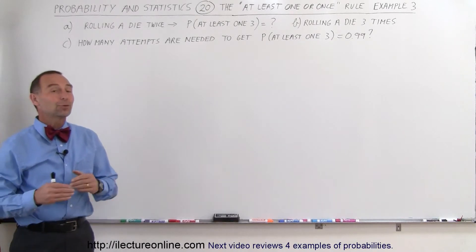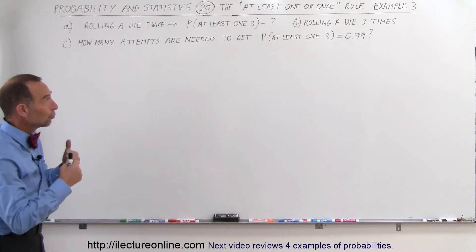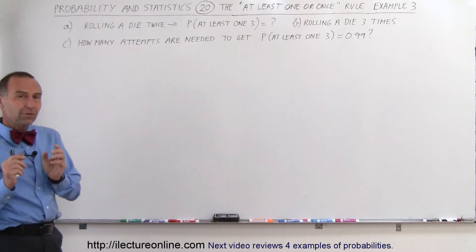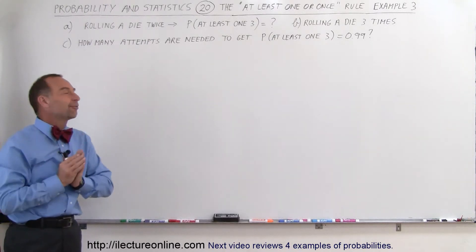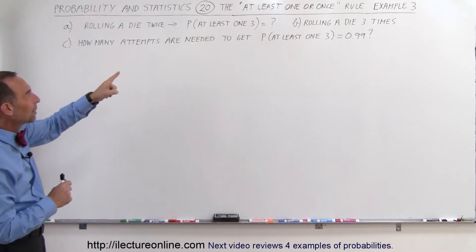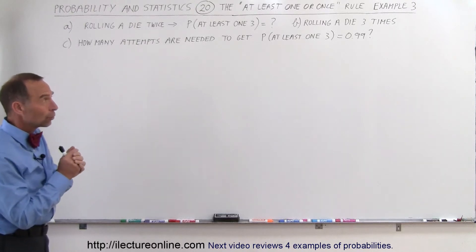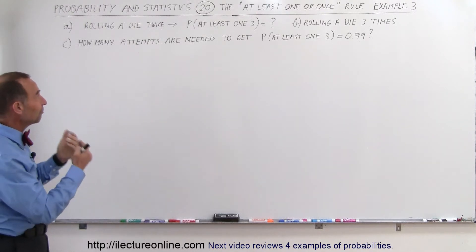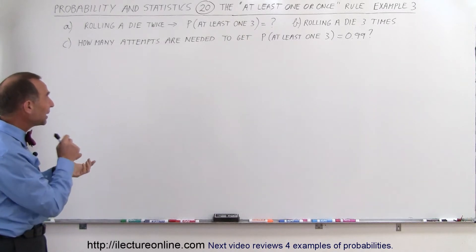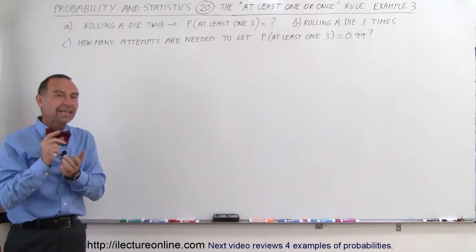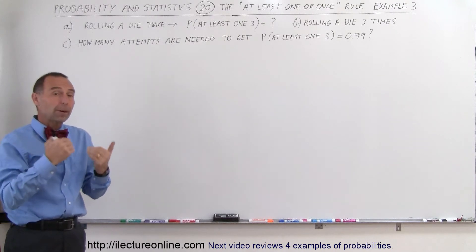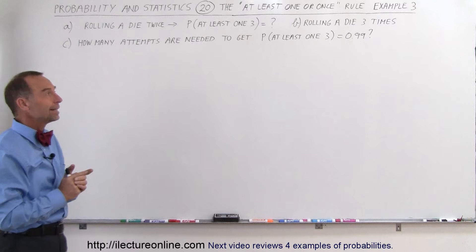Welcome to ElectronLine. Here we're going to do another example of how to use the rule 'at least one' or 'once.' In this case we're going to do things a little bit differently. First we're going to roll a die twice and find the probability of getting at least one three. Then we're going to roll the die three times and do the same thing. Then we're going to find out how many attempts we need to get at least one three with a 99% probability, or probability equal to 0.99.